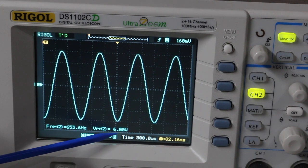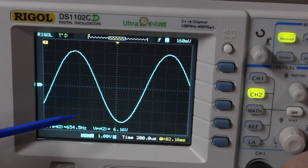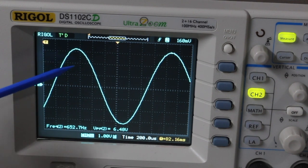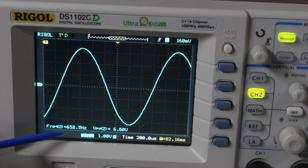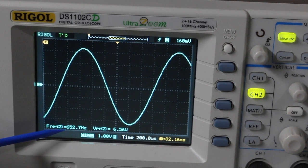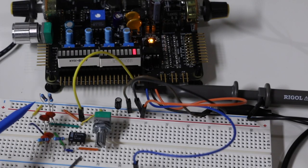So I'll reduce the gain with the feedback potentiometer. So we're close to 6 volts peak to peak now, and we're around 650 hertz. So if we zoom in on this, it looks like a relatively clean and stable sine wave.